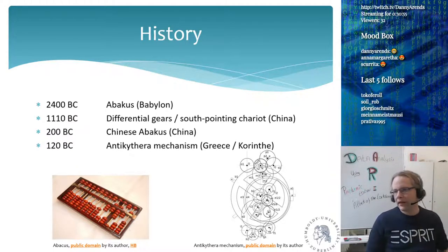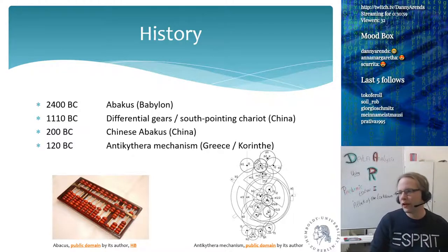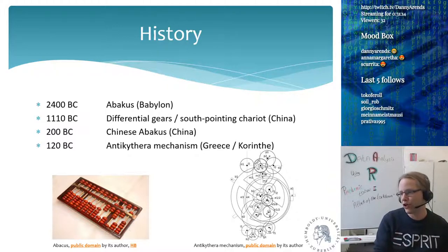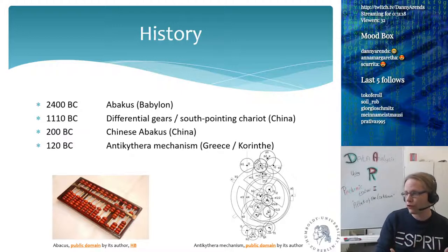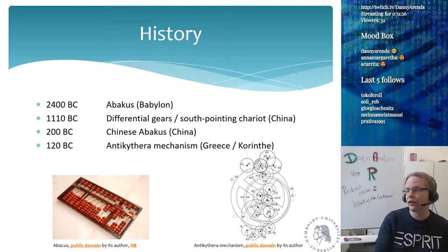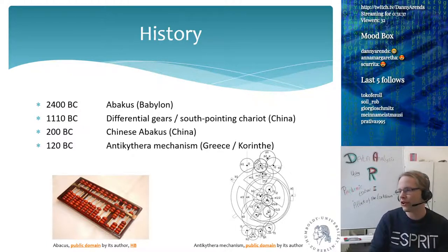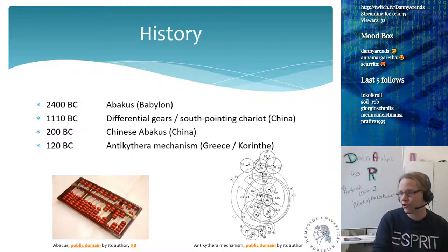In China, differential gears were developed. These are very similar to the south-pointing chariot — a chariot that always faces southward using differential gears, which are an upgrade for basic multiplication and division and also allow integration. In 200 BC, the Chinese abacus was invented — more complex than the simple abacus, allowing multiplication, division, adding, subtracting, and a memory cell for storing answers of previous computations. You can use it more or less like a pocket calculator.